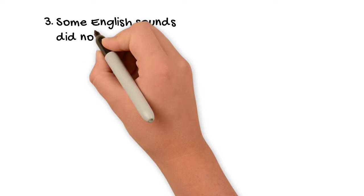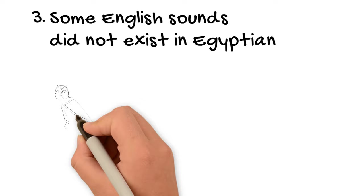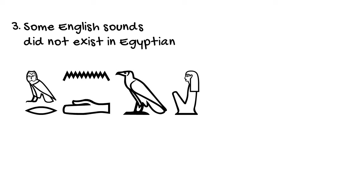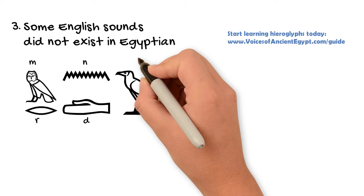Number three: some English sounds did not exist in Egyptian. Alright, so let's look at some other examples to see how this part works. In the last video, I showed you my name in hieroglyphs and I promised you a closer look at my name and why I chose the hieroglyphs I did. So that's what I'll do right now. But if you haven't seen the video, there's a link in the description below and in the cards up in the corner.